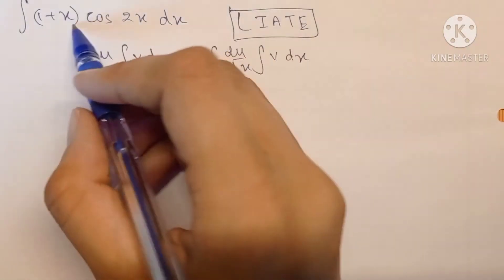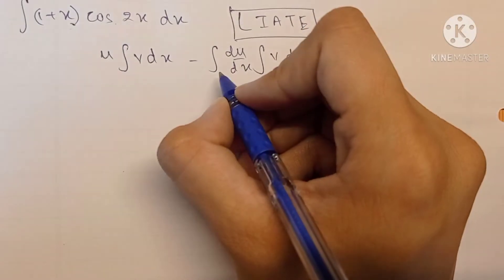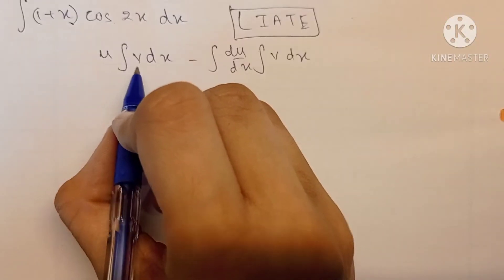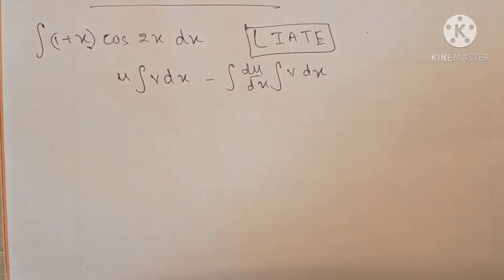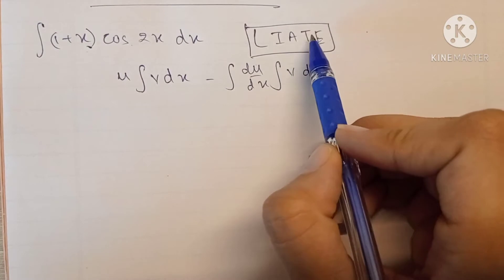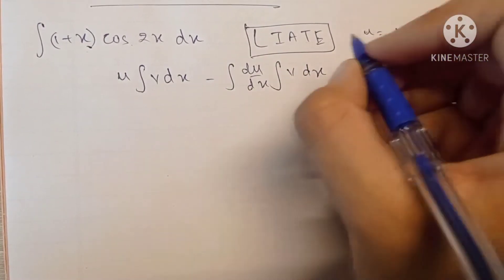Which term out of these two should we keep as u? It decides that on the basis of which term is easier to integrate and which is easier to differentiate. Here, algebraic comes before trigonometric, so the u term will be (1+x) and the trigonometric term cos(2x) will be kept as v.